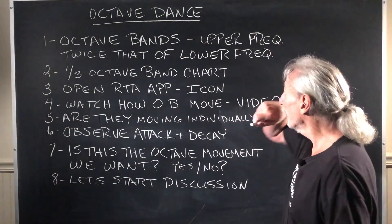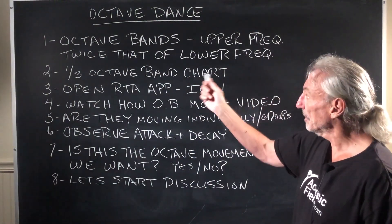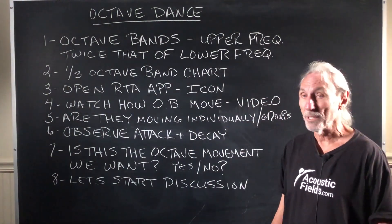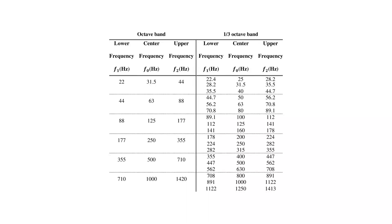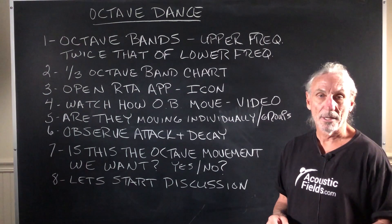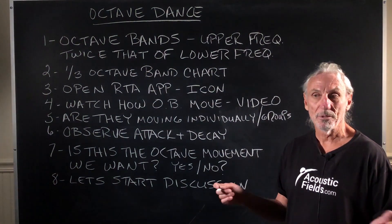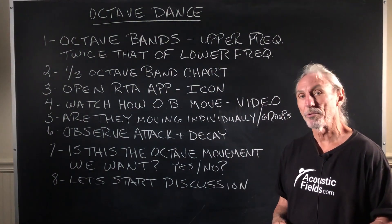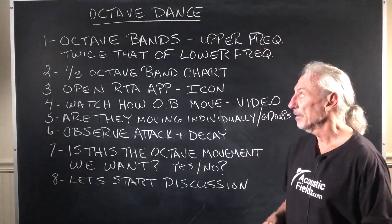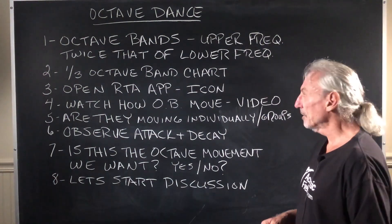So what is an octave band? Well, it's the upper frequency which is twice the lower frequency. You can see in this chart here with the 1/3rd octave band breakdown how that relationship holds up. Most of your real time analyzers are based in 3rd octave bands, 1/12th octave bands, 1/24th — you can get resolution all the way up as high as you want. I think I saw one the other day at 1/64th.